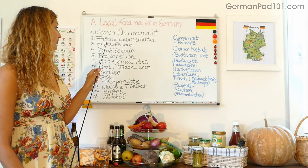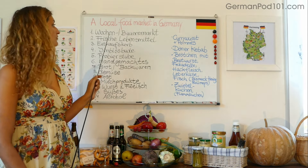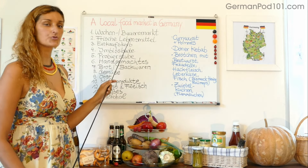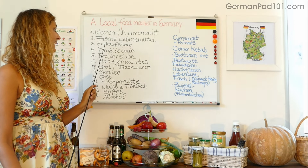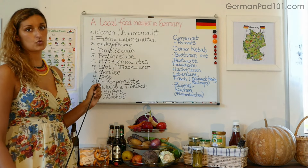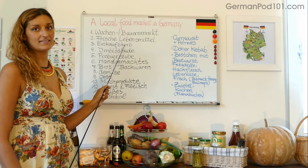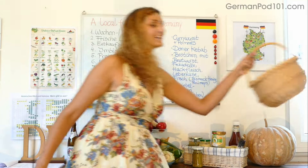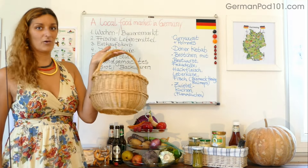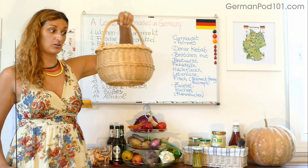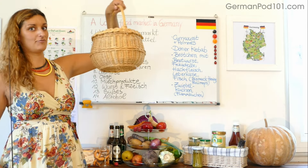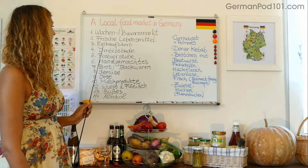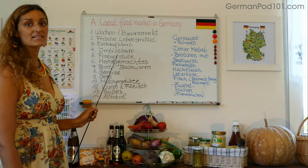Nummer zwei ist frische Lebensmittel. Frisch means fresh, Lebensmittel is food — fresh foods. Die Nummer drei ist der Einkaufskorb. Einkaufen means to do shopping, der Korb is basket — so compound words in German. Ich habe euch mal einen Einkaufskorb mitgebracht — das hier ist ein typischer europäischer oder deutscher Einkaufskorb, der ist handgemacht, self-made. Dann Nummer vier ist die Imbissbude.